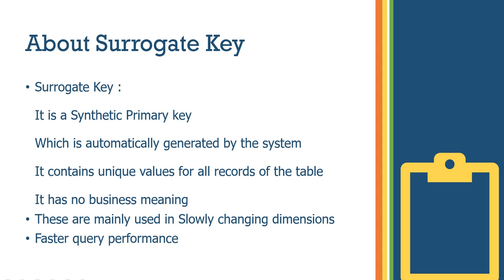This definition is about Surrogate Key. A Surrogate Key is a synthetic primary key which is automatically generated by the system. It contains unique values for all records of the table. It has no business meaning. These are mainly used in slowly changing dimensions, and the main advantage is faster query performance.